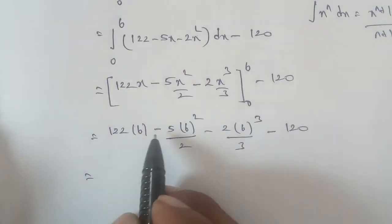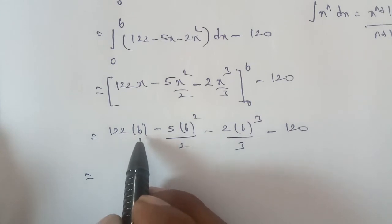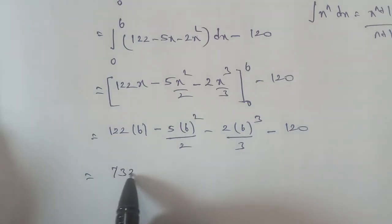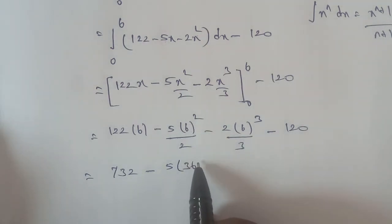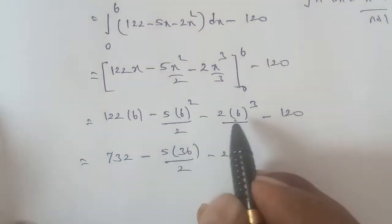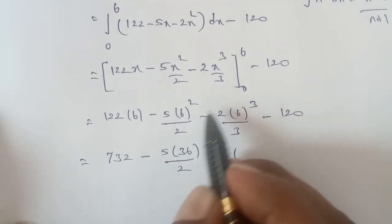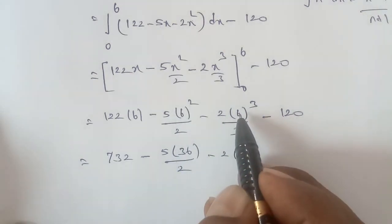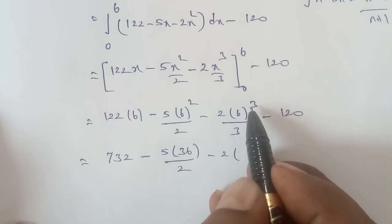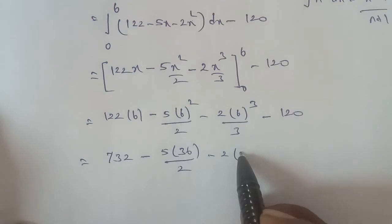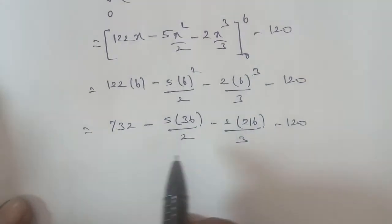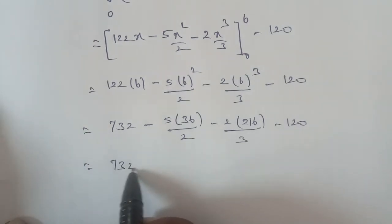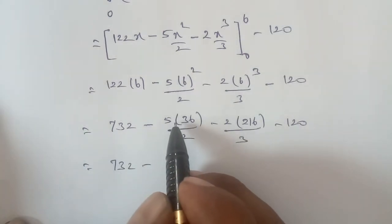Now calculating: 122 times 6 equals 732. Next, 6 squared is 36, so 5 times 36 divided by 2 equals 90. Then 6 cubed: 6 times 6 is 36, times 6 is 216. So 2 times 216 divided by 3 equals 144. We also have the remaining minus 120. So we compute 732 minus 90 minus 144 minus 120.